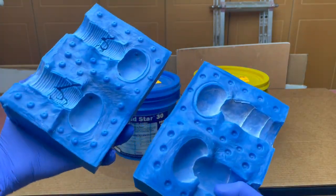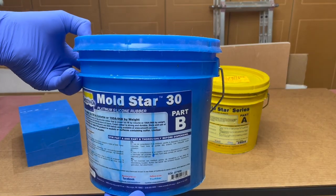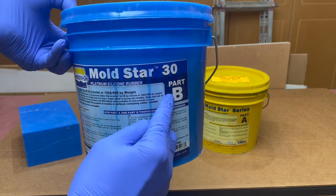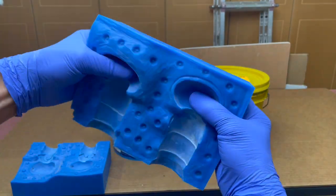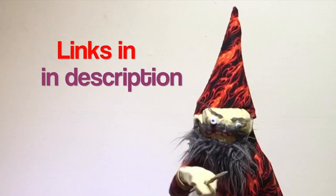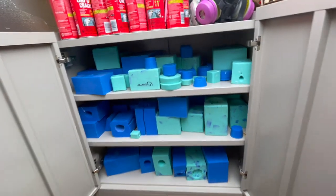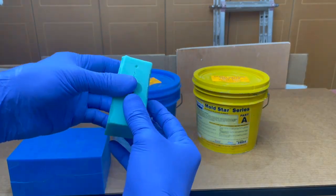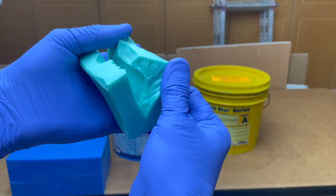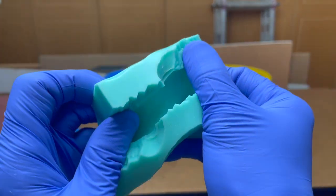The silicone I'm using is Mold Star 30 by Smooth-On. It's a two-part A and B mixed equally by volume. Very easy to use, very durable, and great for resin casting. All of my molds for resin casting are either Mold Star 30 or Mold Star 15 which is a little bit softer and more flexible so better for pieces with lots of details and undercuts.